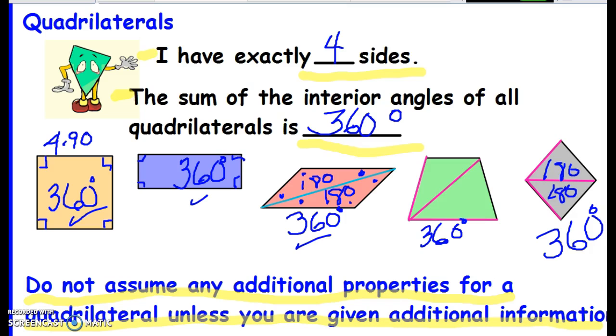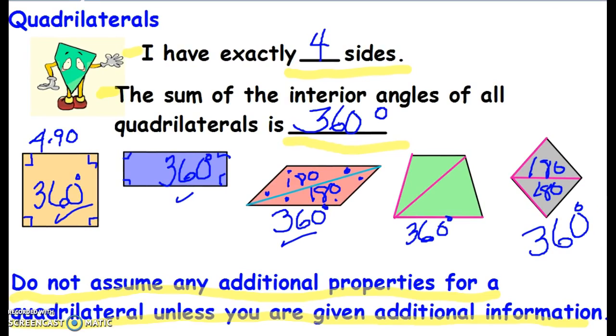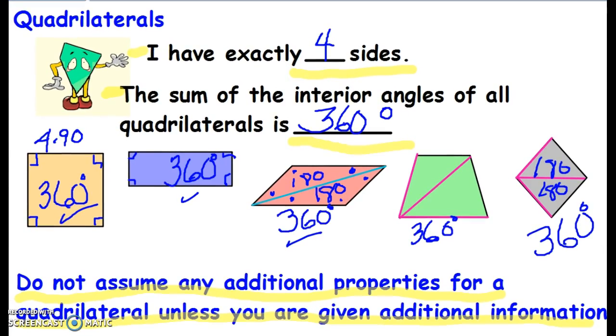I don't know anything else. If I know nothing else about a quadrilateral, then the only thing I can say is, well, that quadrilateral has four sides and it totals 360 degrees. That's it.